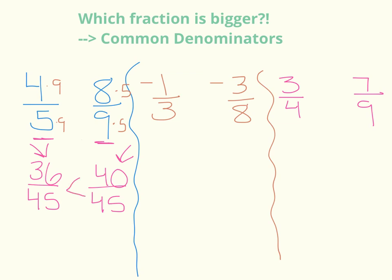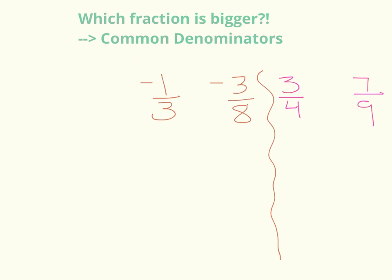So I can use a less than symbol, 36/45 is less than 40 out of 45. Or I think in the assignment, you're asked to circle the larger fraction. My next set of fractions, negative one-third and negative three-eighths. So we can get a common denominator. Temporarily, we can ignore those negative numbers, but we need to take them into consideration when we decide which fraction is bigger.